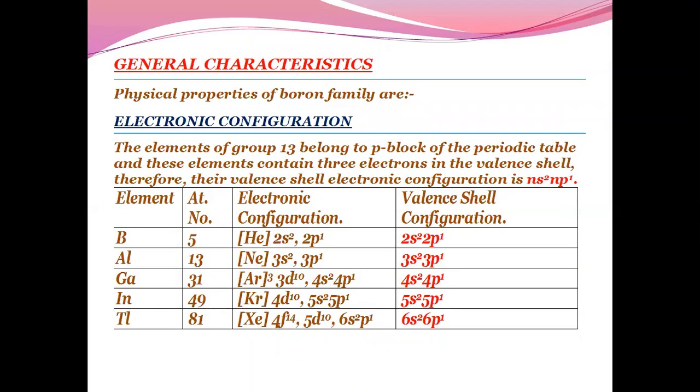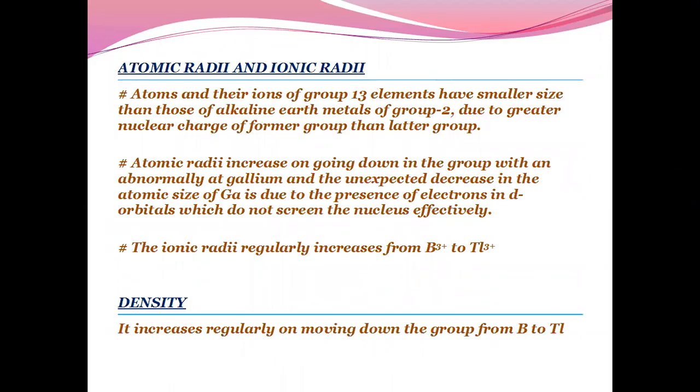Let us talk about atomic radii and ionic radii. Atoms and their ions of group 13 elements have smaller size than alkaline earth metals of group 2 due to greater nuclear charge. Atomic radii increases down the group with an abnormality at gallium. The unexpected decrease in atomic size of gallium is due to the presence of electrons in the d-orbital, which do not screen the nucleus effectively.